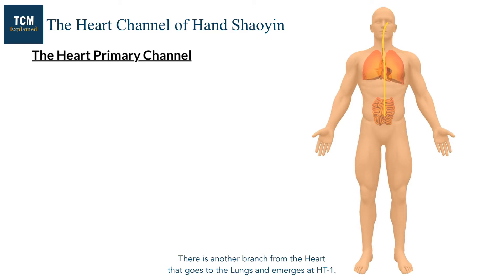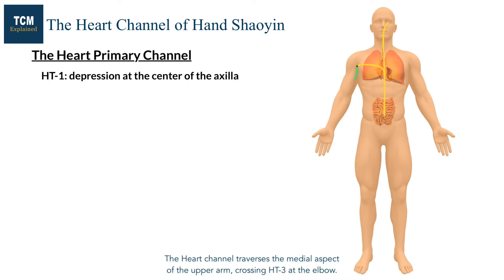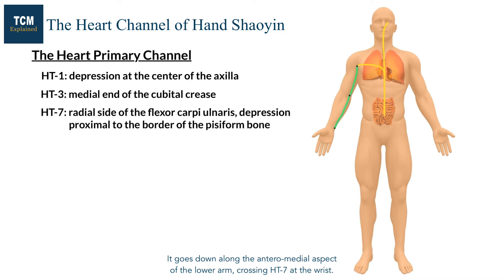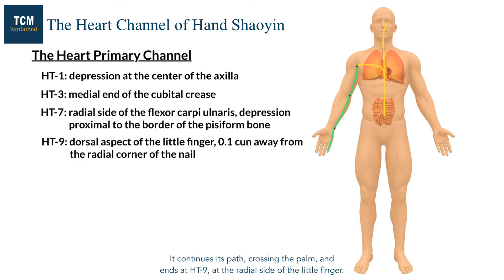There is another branch from the heart that goes to the lungs and emerges at Heart 1. The heart channel traverses the medial aspect of the upper arm, crossing Heart 3 at the elbow. It goes down along the anterior medial aspect of the lower arm, crossing Heart 7 at the wrist, crossing the palm, and ends at Heart 9 at the radial side of the little finger.